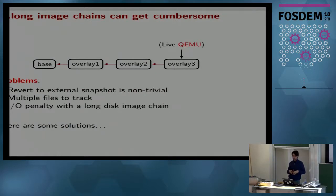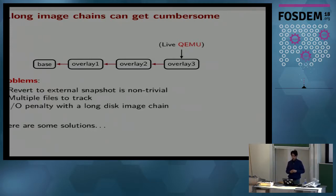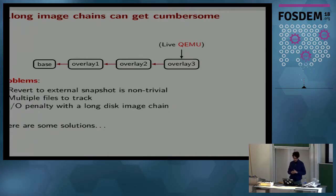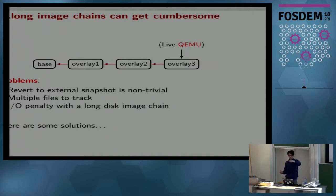However, managing long backing chains can get tedious — and not only tedious, but there can be an IO penalty involved. For example, when you have a long backing chain, there are multiple files to track. I've even heard of cases where somebody used a 100-deep backing chain. It can get really cumbersome. Also, there can be an IO penalty: if a cluster that QEMU wants to read is not in the immediate overlay but somewhere in between, you have to traverse through all the images to find it and cache it.